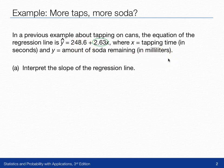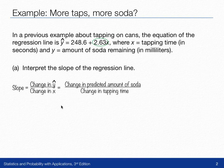In this case, 2.63 means the slope is the change in y over the change in x. In this case, we're talking about the change in y-hat because it's y-hat, it's a predicted value of y. And so we can write that as the change in predicted amount of soda over the change in tapping time. And that value is equal to 2.63.